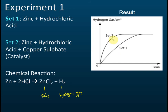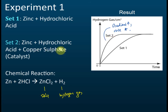From the graph, set two has a higher gradient, and therefore the rate of reaction is higher. With the presence of copper sulfate, the rate of reaction increases. This is proof that a catalyst can change the rate of reaction.